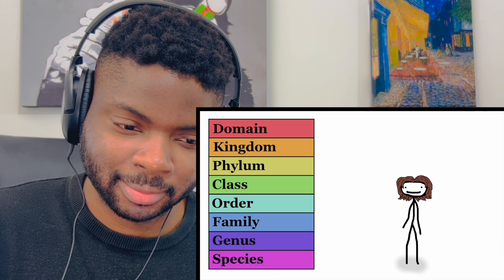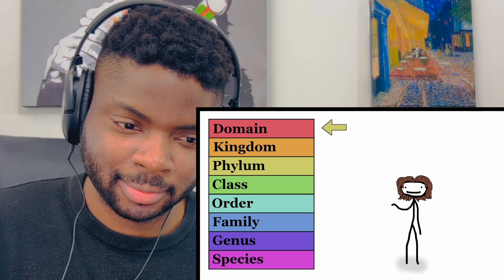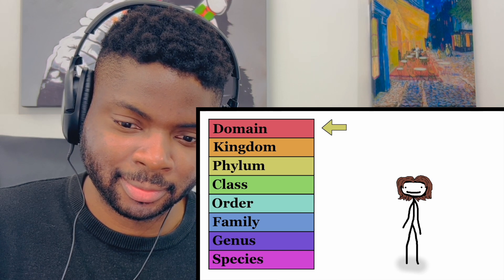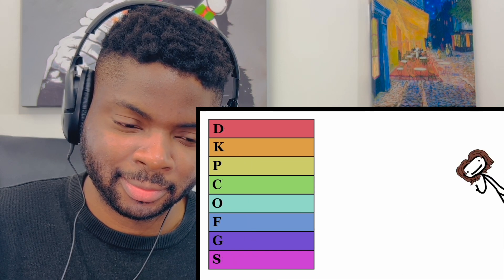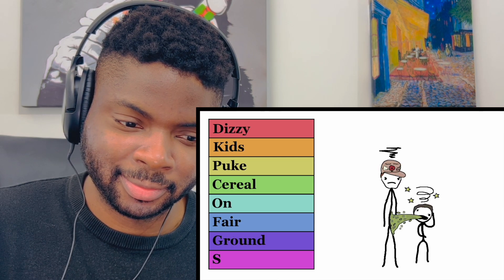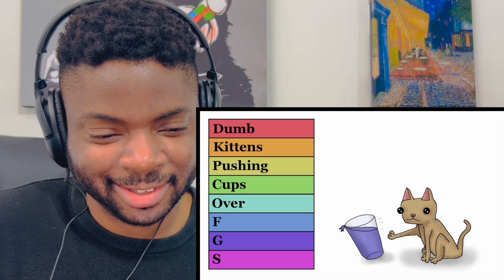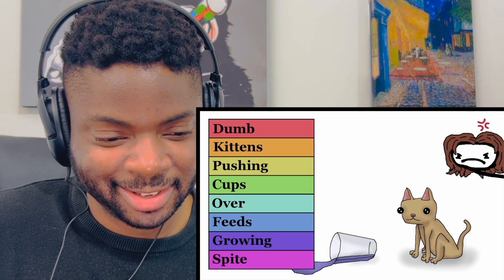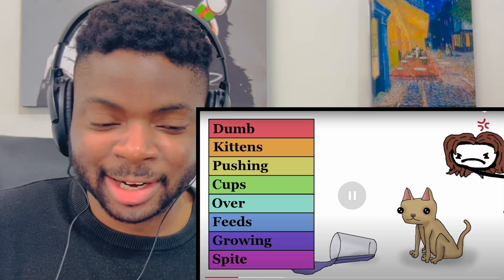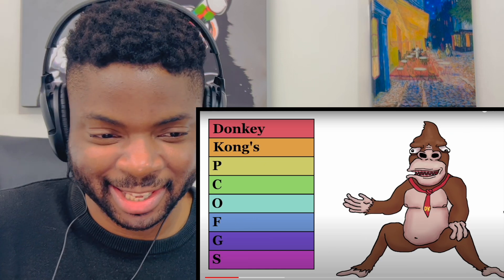First you've got the big eight: domain, kingdom, phylum, class, order, family, genus, species. I've seen plenty of mnemonic devices for this, but since the domain just showed up in the 90s and is still disputed by some scientists, it's usually not included. So allow me to suggest a few: 'Dizzy Kids Puke Cereal On Fairground Staff,' 'Dump Kittens Pushing Cups Over Feeds Growing Spite.' I'm not going to remember any of these - are you guys?